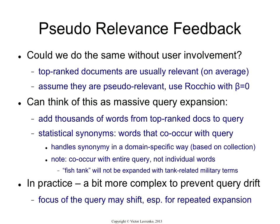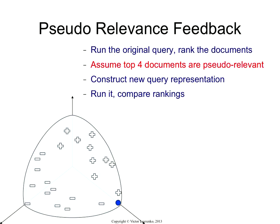But can you use something like that without getting the user to interact? Because it's very hard to get the user to interact. And it turns out that yes, you can. This is called pseudo-relevance feedback, and it's one of the most effective tricks in the book. The idea is you pretend that the user has marked the top relevant documents. Of course, you don't know which ones are relevant or non-relevant, so you pretend that everything at the top of the ranking is relevant.